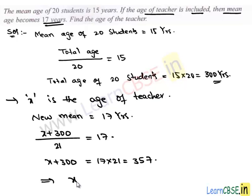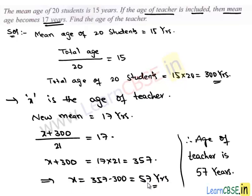Therefore, the value of x is 357 minus 300, which is equal to 57 years. Therefore, we get the value of x is 57 years and the age of teacher is 57 years.